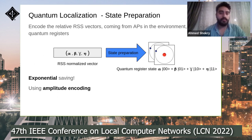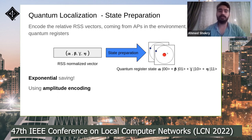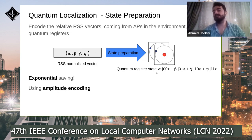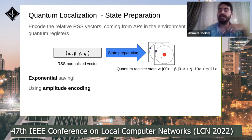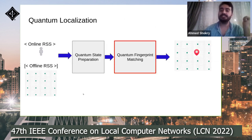The target of quantum state preparation is to encode the RSS vector from different access points into a quantum register. For example, a vector with four elements α, β, γ, η is encoded so the quantum register state is α|00⟩ + β|01⟩ + γ|10⟩ + η|11⟩. Note the exponential saving: a vector of size four is included in just two qubits using amplitude encoding.